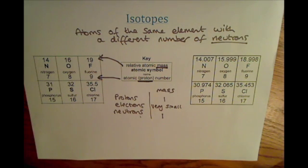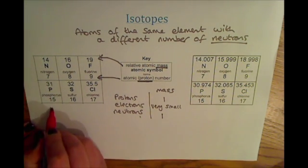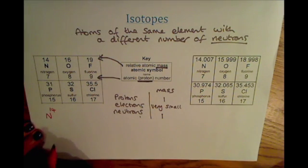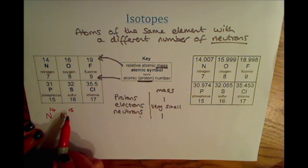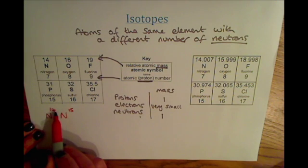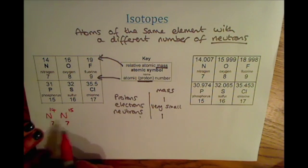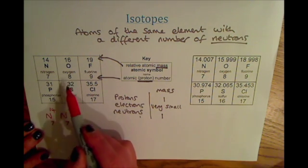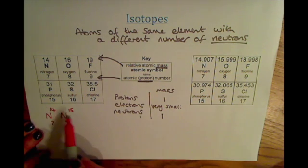For example, nitrogen in the periodic table has an atomic mass of 14, but in nature there may well be nitrogen atoms with an atomic mass of 15 — this would be an isotope. It has a different mass number because it has an extra neutron. The proton number would stay the same, so it would still have seven protons; otherwise it would become oxygen.